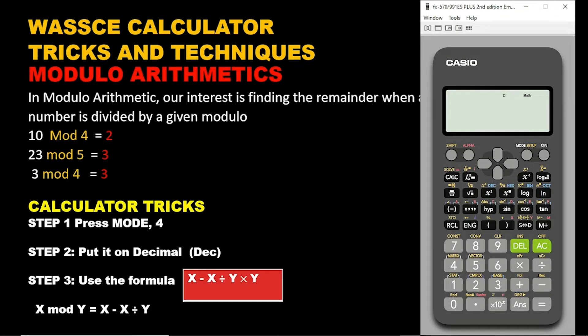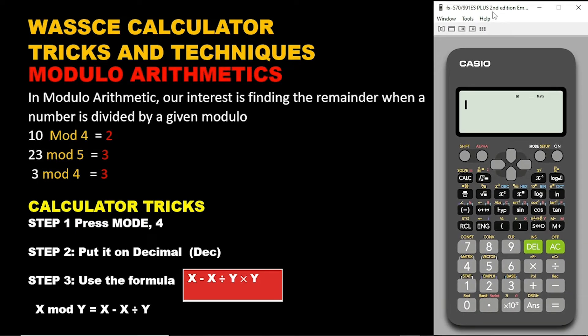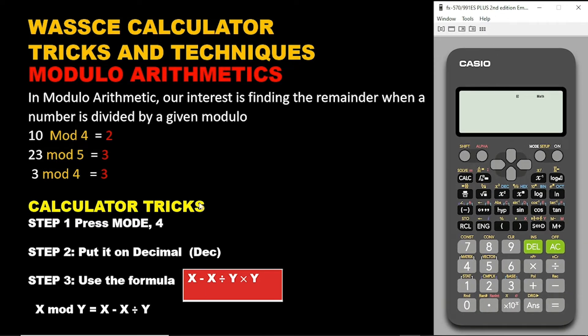This is just a quick video. This is a trick that you need to know in order to solve any question on modulo arithmetics in examination. In fact, your calculator has been programmed in a way that you should be able to do these things in just less than two seconds. Now we know that in modulo arithmetics, our interest is finding the remainder when a number is divided by a given modulo.